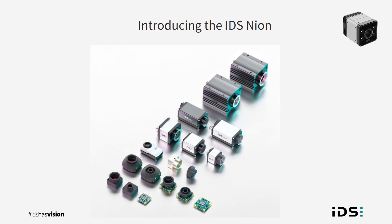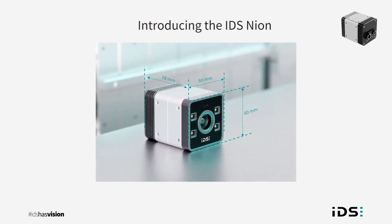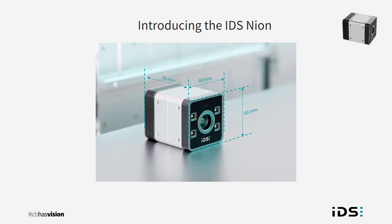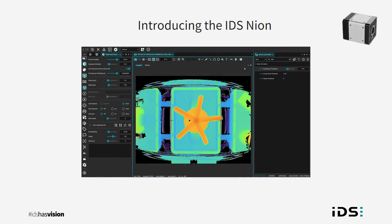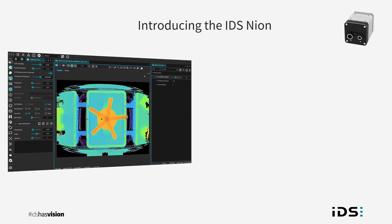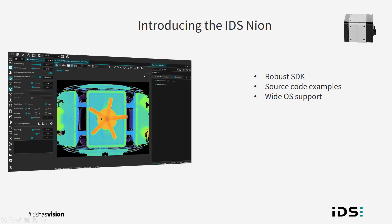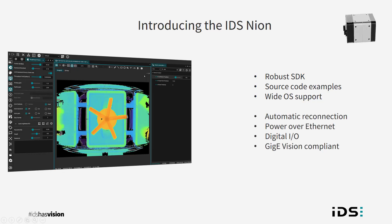As the Nyon is an industrial product, we have leaned on our experience of manufacturing industrial 2D cameras to provide a robust aluminium housing with IP65/67 protection rating, making it ideal for all but the most challenging of industrial environments straight out of the box. We have also leaned on our experience with software — the Nyon is operated from our IDS Peak software, delivered with an easy to use robust software development kit with source code examples and wide operating system support, as well as features such as automatic reconnection, Power over Ethernet, and digital inputs and outputs for synchronization.